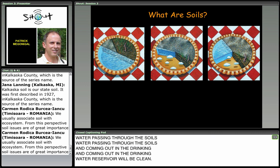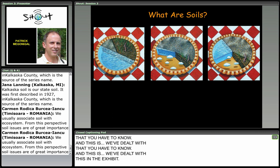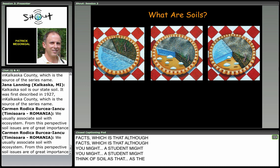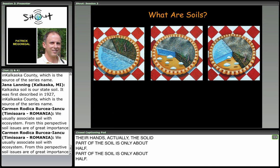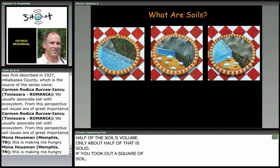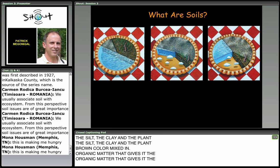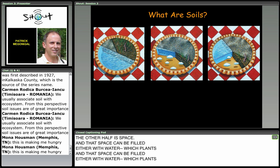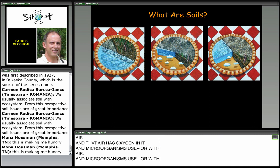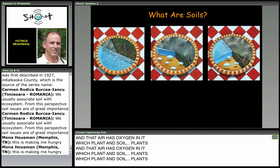To teach soils, there are some basic facts to know. Although a student might think of soil as the solid stuff they hold in their hands, the solid part of soil is only about half of the soil's volume. That solid part is the sand, silt, clay, and plant organic matter that gives it the brown color. The other half is space — and that space can be filled either with water, which plants and microorganisms use, or with air that has oxygen, which plants and soil organisms also use.